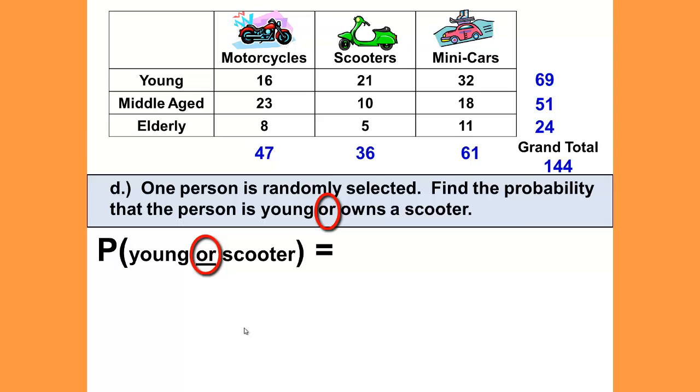Or is the union of young and scooter for our particular problem. As we circle the groups that we're looking at, notice that we want to shade everything. Everything that is young or scooter would be what we're looking for. It is the union of these two groups. Where and is the intersection, or is the union. Anything on either row, young, or column, scooter, fits our description of young or scooter.